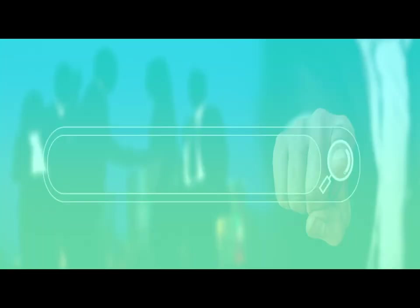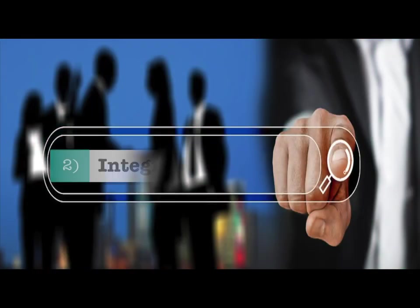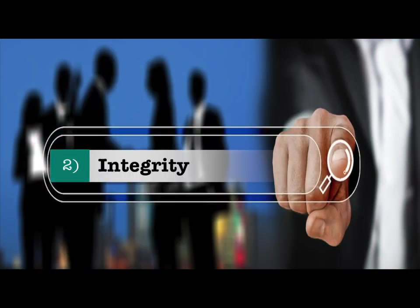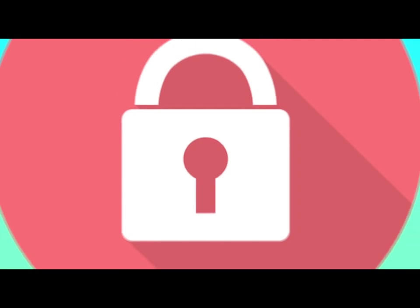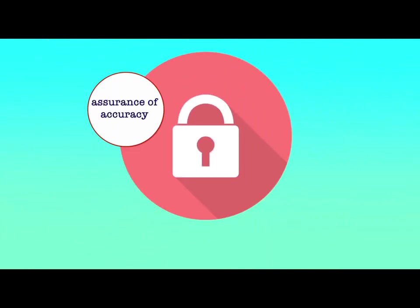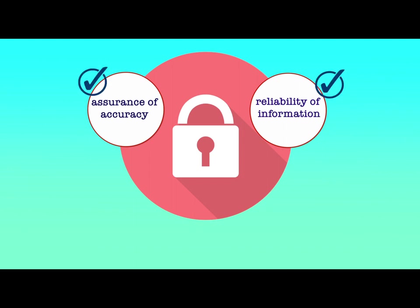The second security principle is Integrity, which means that the integrity of data is protected when the assurance of accuracy and reliability of information and systems is provided and unauthorized modification is prevented.